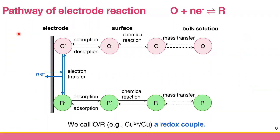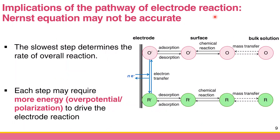Why do we care about this pathway? It turns out that, going back to general chemistry or physical chemistry, you have learned about chemical kinetics and reaction rates. One key principle is that when a reaction occurs through several steps, the slowest step dictates the overall reaction rate. The same applies here — we have several processes, and the rate of the overall redox reaction is determined by the slowest step.